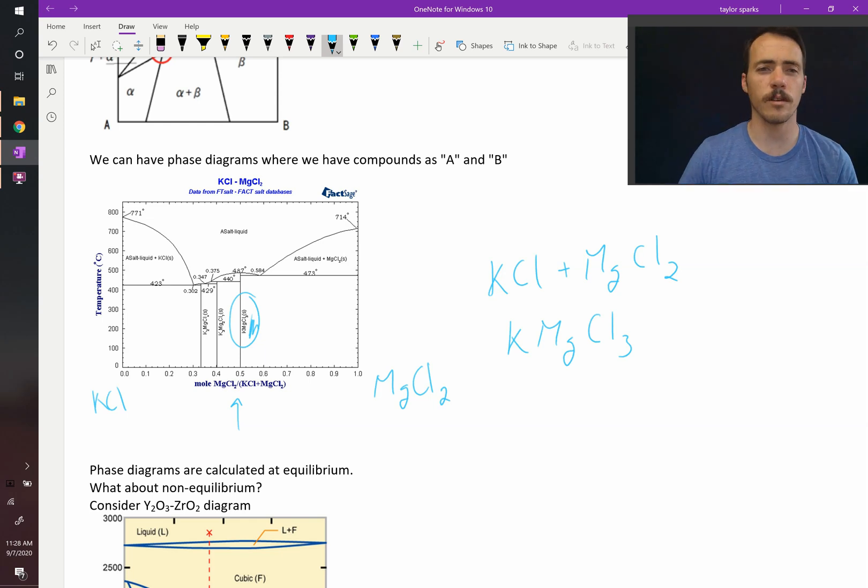So that's an example of a phase diagram that doesn't have pure elements. It has compounds. Those are totally fair game as well. We can do those.